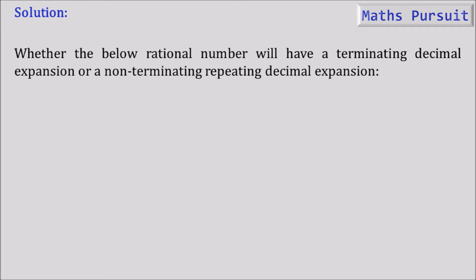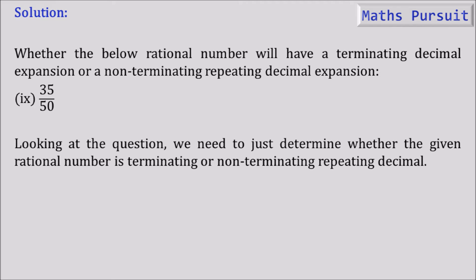Coming to the solution, we need to find out whether the below rational number will have a terminating decimal expansion or a non-terminating repeating decimal expansion. And the given number is 35 by 50. Looking at the question, we need to just determine whether the given rational number is terminating or non-terminating repeating decimal. Because in the question it is mentioned that we are not going to do any long division calculations.